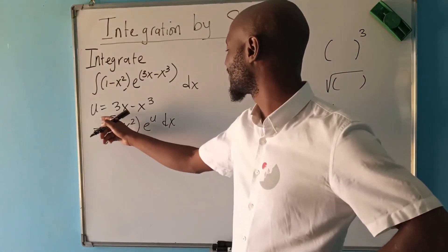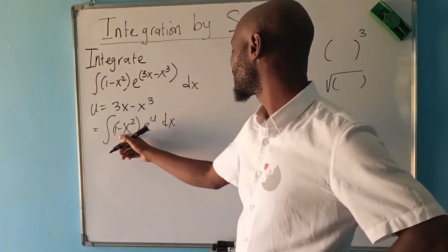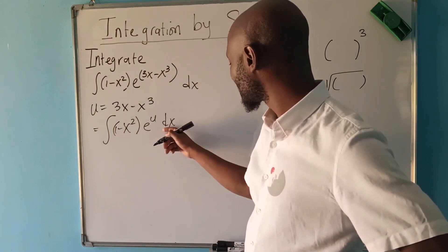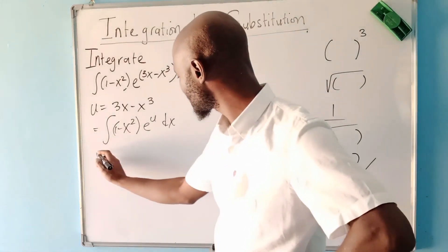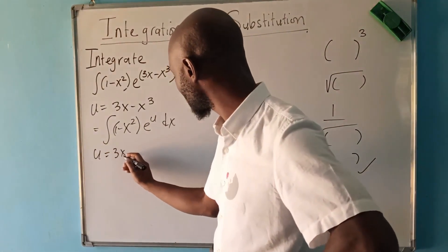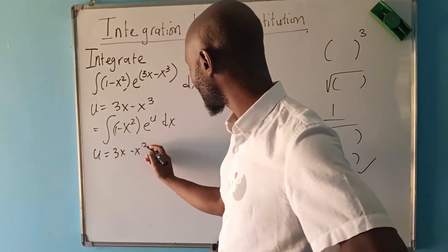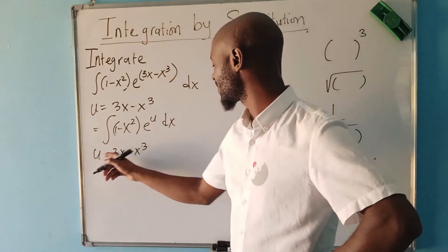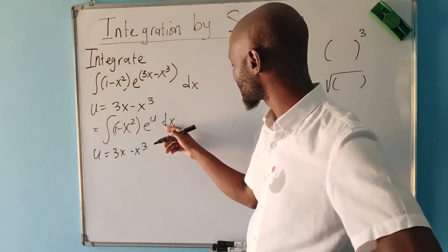We need to simplify this one. If we can't directly, we have to manipulate u so that all the variables — all the x's — are changed to u. We have said u = 3x − x³, so we need to differentiate u so that we can have dx and make it the subject of the formula.